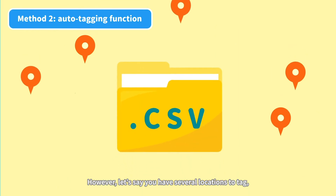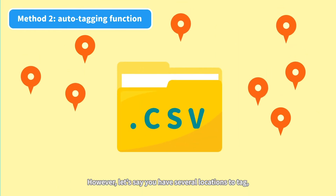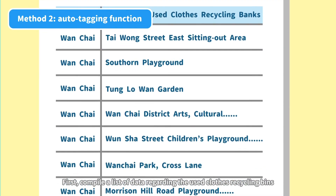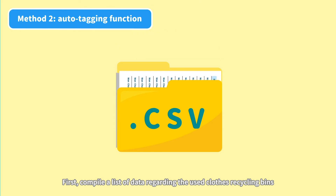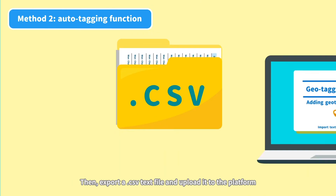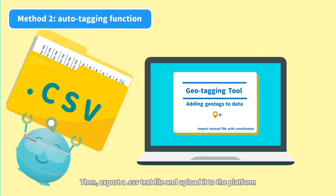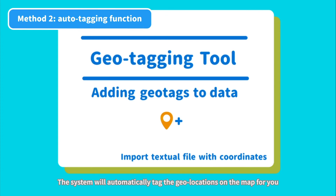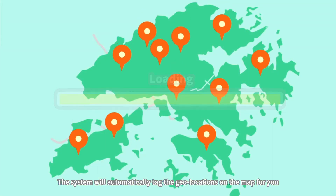However, let's say you have several locations to tag. You will probably find it time-consuming to tag them one by one. In such a case, you may try out the auto-tagging function. First, compile a list of data regarding the used clothes recycling bins. Then export a CSV text file and upload it to the platform. The system will automatically tag the geolocations on the map for you.